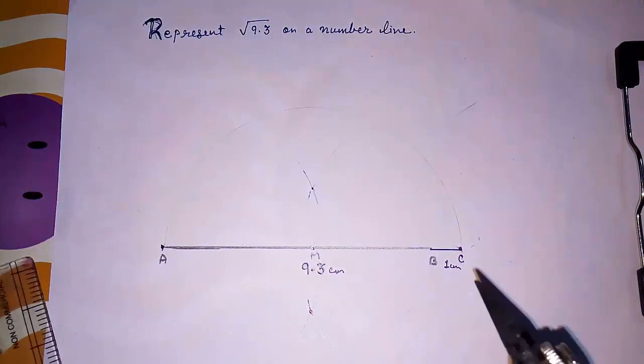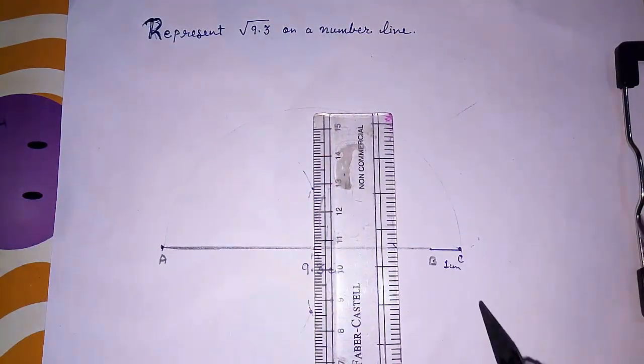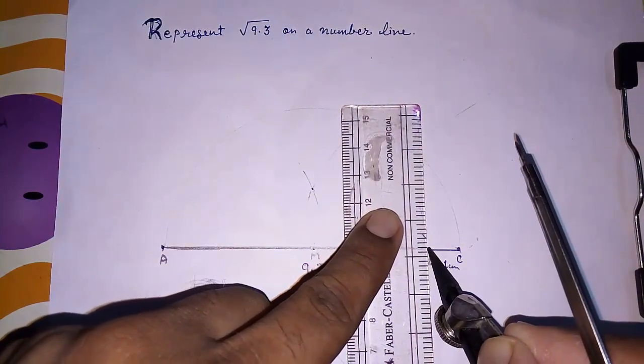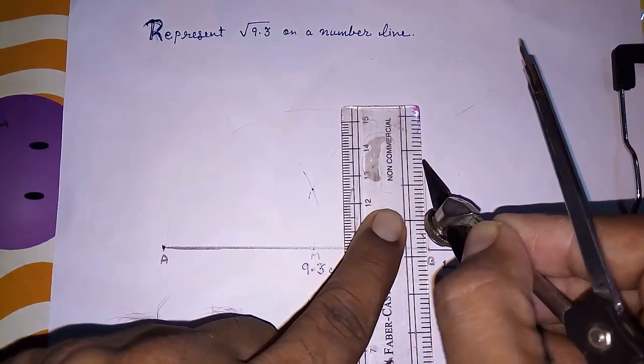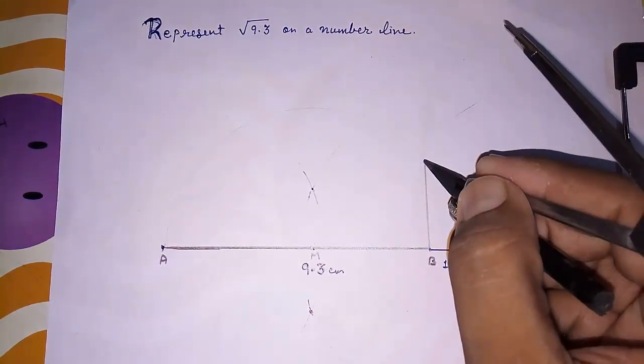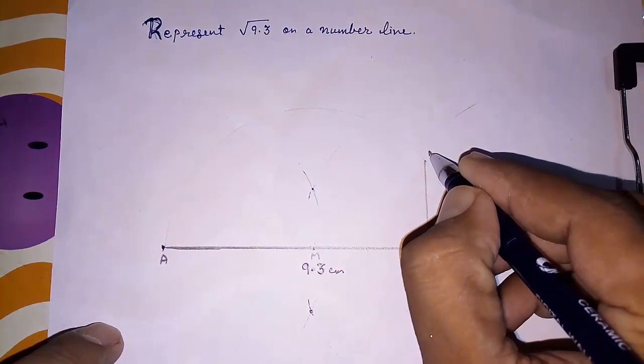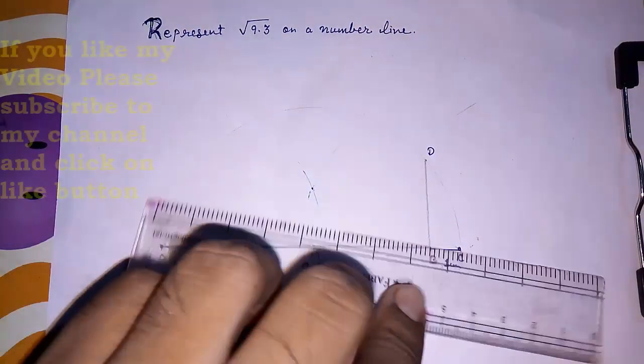Now we have to draw perpendicular from this B. I am drawing it directly. You have to take protractor and you have to construct perpendicular. Here it is intersecting somewhere here. Give that point D. Now we have to extend this line also. I am extending it.